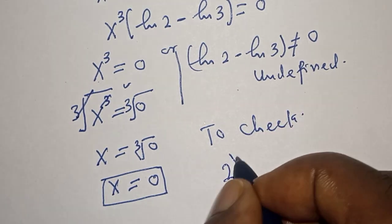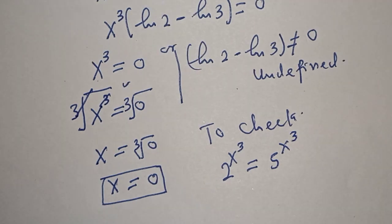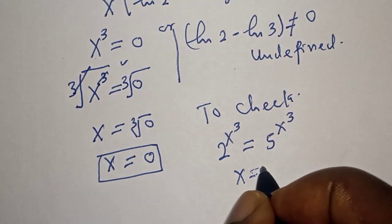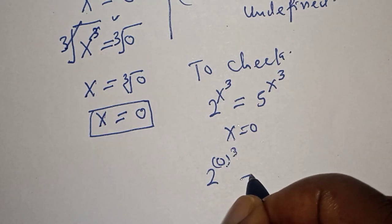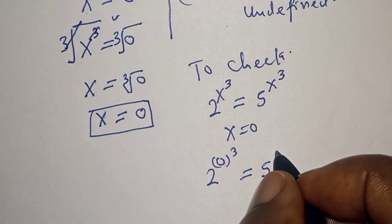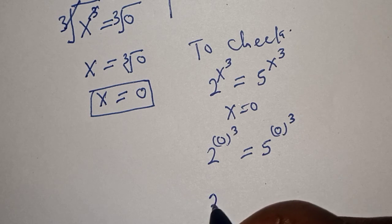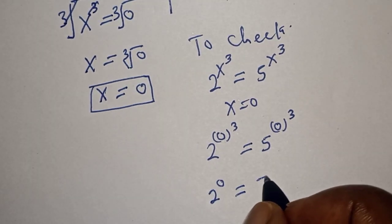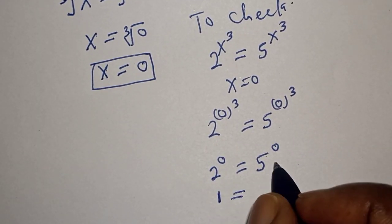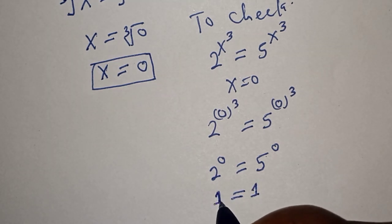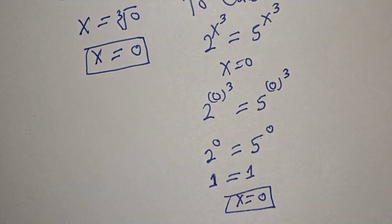Let's check to confirm our answer. We have 2^(s³) = 5^(s³). Substituting s = 0: the exponent becomes 0³ = 0, so we get 2 raised to power 0 equals 5 raised to power 0, which is 1 equals 1. This satisfies the given equation, confirming s equals 0.